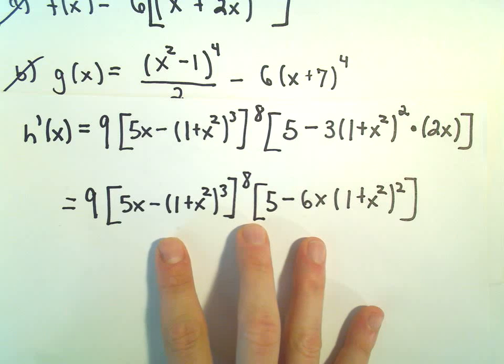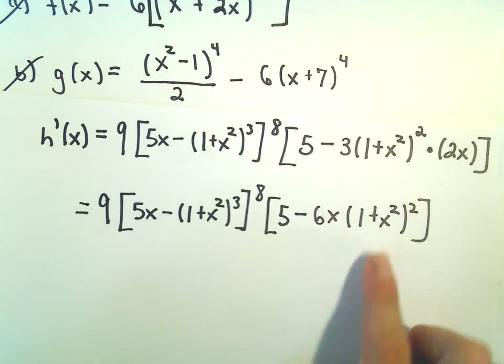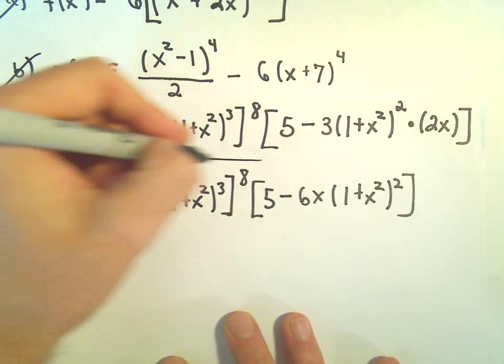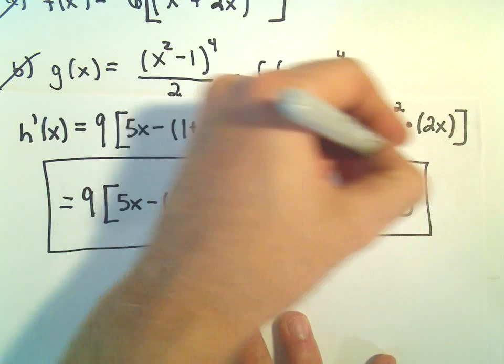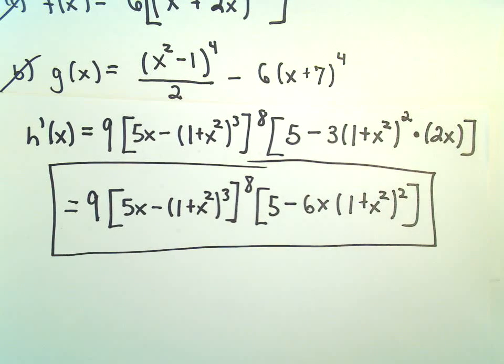At this point I would probably leave it alone. There's nothing really that you can factor out that I see readily. I just wouldn't want to start expanding this stuff out and raising it to powers. There's no good reason to do so. There's our derivative again. In that case, we had to be a little careful because we had to use this chain rule a few times.